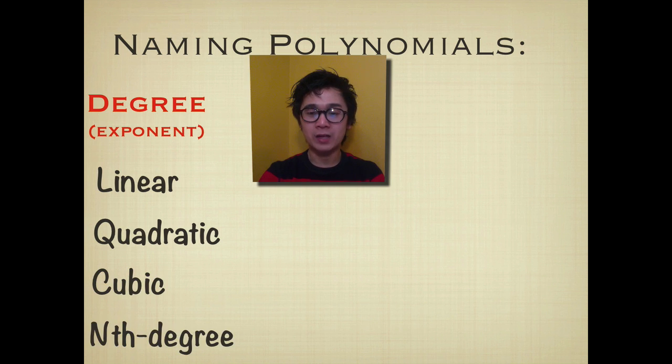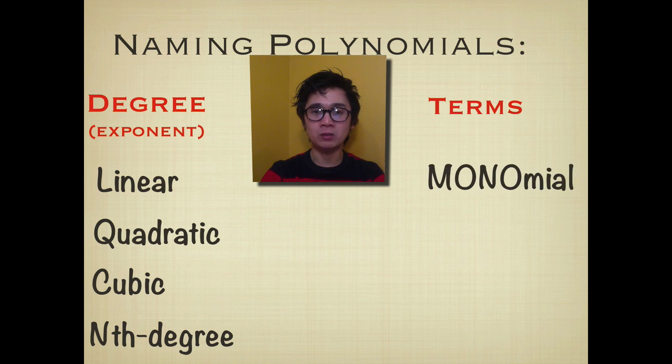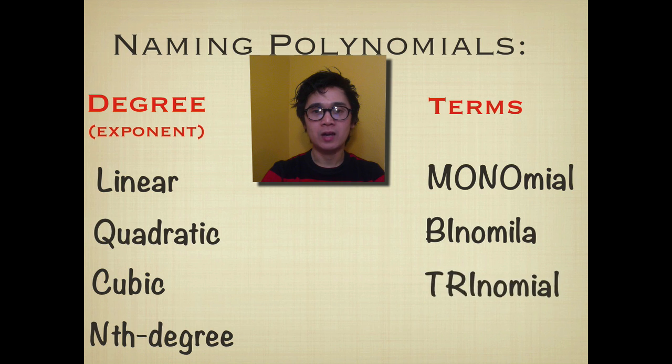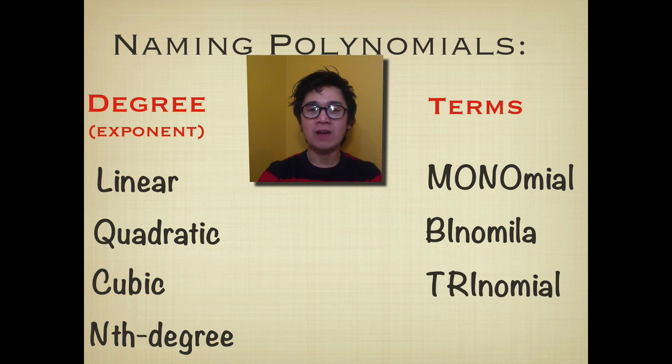The next method of naming polynomial is according to its number of terms. We have a monomial, or a polynomial with one term. We have binomial, a polynomial with two terms, and a trinomial with a polynomial of 3 terms. And if we have 4 or more terms in our polynomial, we simply call them polynomial.